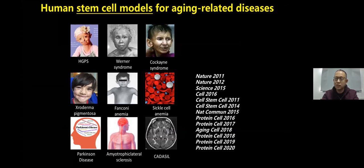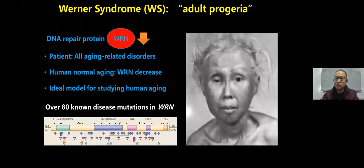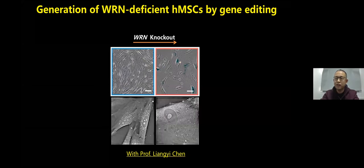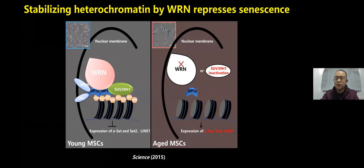Take Werner syndrome as an example. This is a disease caused by the lack of WRN protein. The patients show almost all aging-related diseases, but appearing in an accelerated manner. To mimic this disease, we knocked out WRN in human mesenchymal stem cells. After WRN knockout, these cells become senescent, implying that stem cell exhaustion is a feature of premature aging disease. We identified that WRN inhibits cellular senescence by stabilizing heterochromatin at the nuclear periphery. When WRN is depleted, heterochromatin becomes decondensed and accelerates cellular senescence.